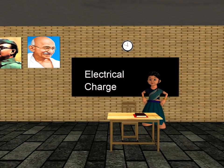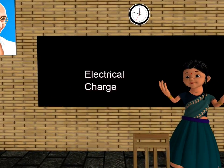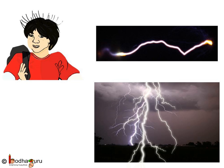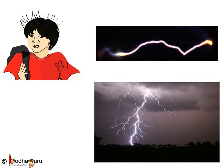Good morning children. Today we shall learn about charging and discharging of objects. If you try to put on a woolen sweater while your hair is dry, your hair will stand straight. Do it in the dark and you may see a small spark and hear a crackling sound. This phenomenon is actually the same as lightning — that small spark while putting on a sweater and lightning are both caused by the same reason: the accumulation of charges.